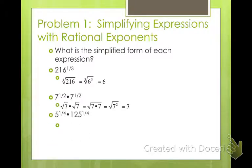This one, 5 to the 1/4 times 125 to the 1/4. So we're going to have the 4th root of 5 times the 4th root of 125. We're going to multiply those two together. And you get 625. Well, did you know that 125 is 5 cubed? Go figure. So that's 5 to the 4th. The 4th root of 5 to the 4th is 5.